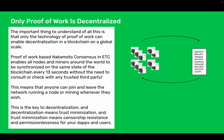Only proof of work is decentralized. The important thing to understand is that only the technology of proof of work can enable decentralization in a blockchain on a global scale. Proof of work based Nakamoto consensus in ETC enables all nodes and miners around the world to be synchronized on the same state of the blockchain every 13 seconds without the need to consult or check with any trusted third party. This means that anyone can join and leave the network, running a node or mining whenever they wish. This is the key to decentralization, and decentralization means trust minimization, and trust minimization means censorship resistance and permissionlessness for your dApps and users.